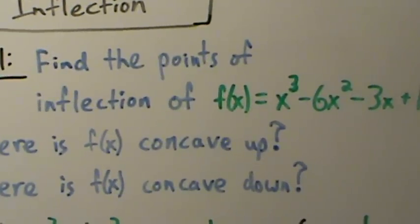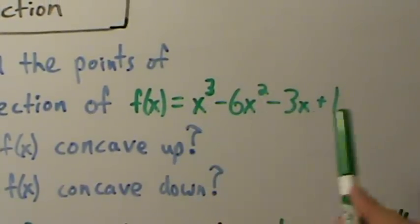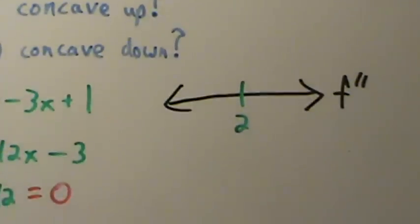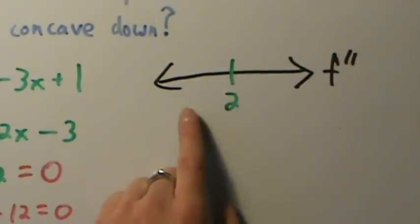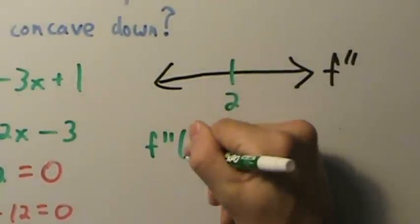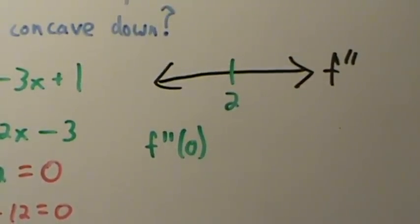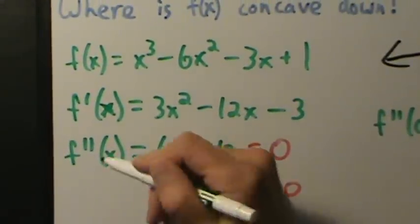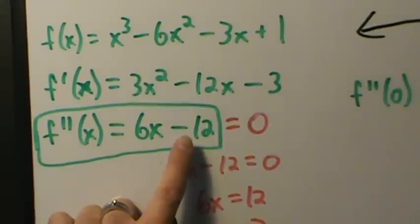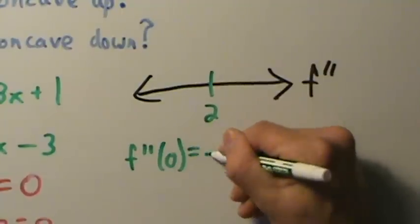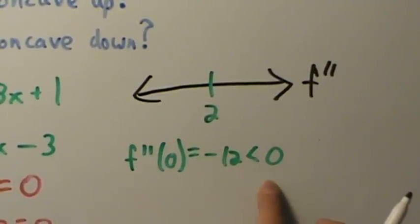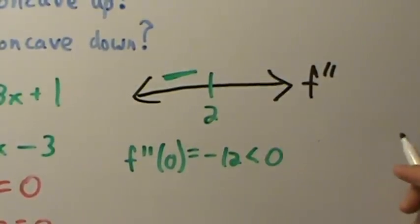First, note the domain: this is a polynomial, so the domain is all real numbers. For the interval (-∞, 2), let's test x = 0. We only care about the sign, not the actual value. f''(0) = 6(0) - 12 = -12, which is negative.